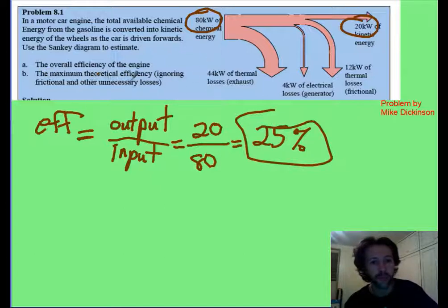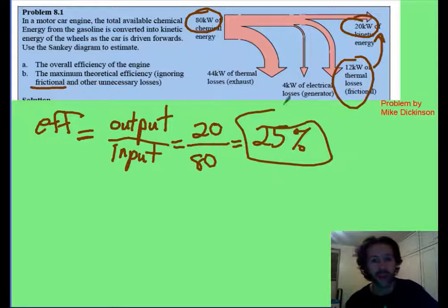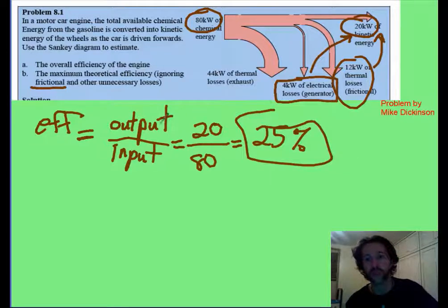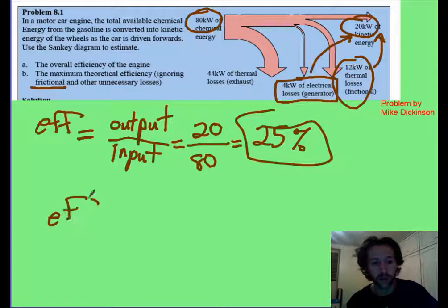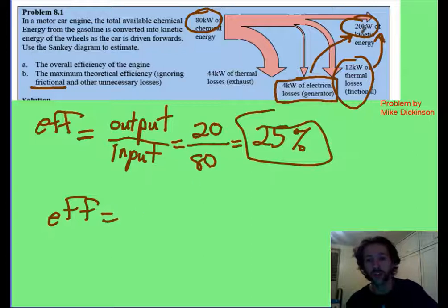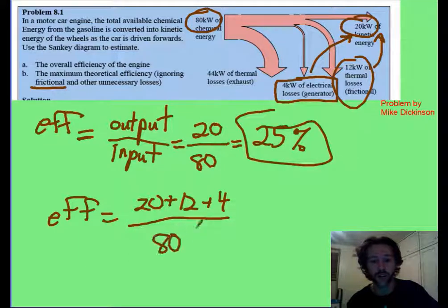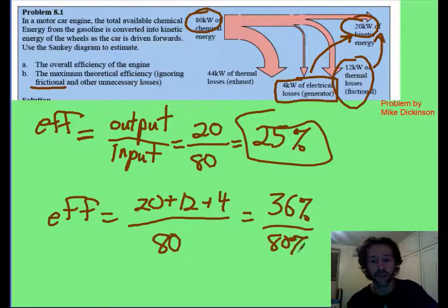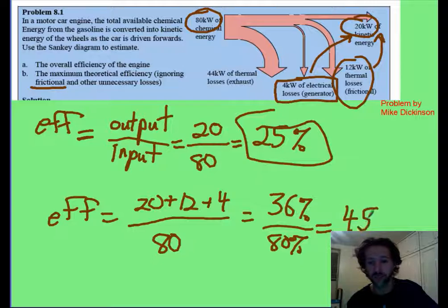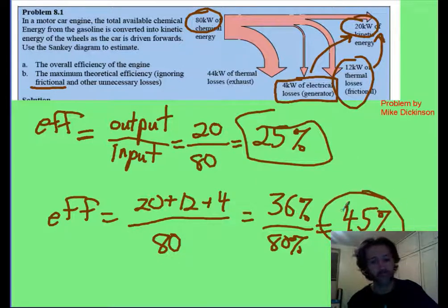And then, this wants to know maximum theoretical efficiency ignoring friction. So that means this friction becomes useful. And electrical losses. I don't know if that's hardly unnecessary, but let's assume you don't have to do it. So now our efficiency, our output, has been 20 plus the 12 that's been added to it, 32. And that's still divided by the total of 80. And that's going to be about 36 divided by our 80. And that gives us 45%. It's just that easy.